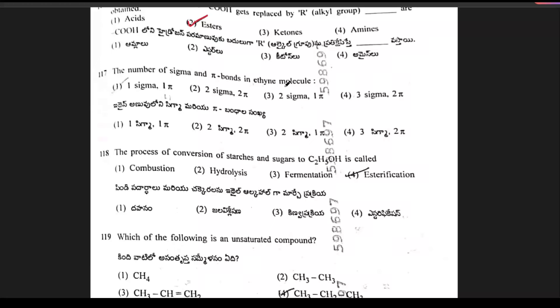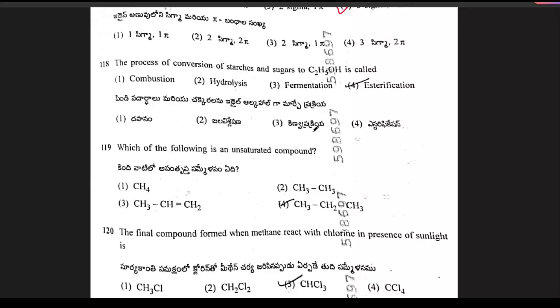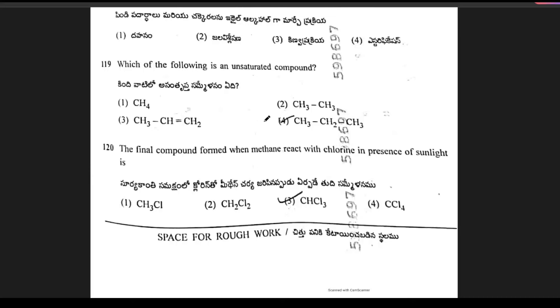The number of sigma and pi bonds in ethene molecule. There are 3 sigma bonds and 2 pi bonds. Option 4 is the right answer. Next, the process of conversion of starches and sugars to C2H5OH is called fermentation. Option 3 is the right answer. Next question: which of the following is an unsaturated compound? It is option 3. The final compound formed when methane reacts with chlorine in presence of sunlight is CCl4.